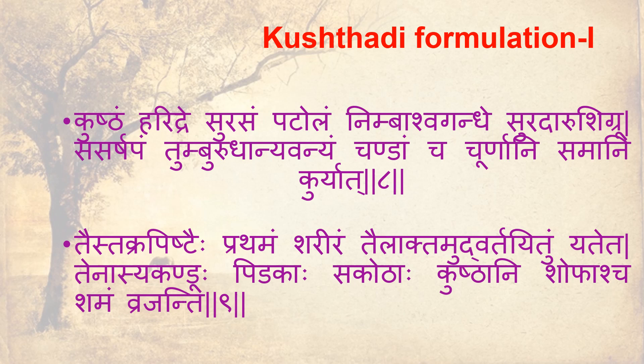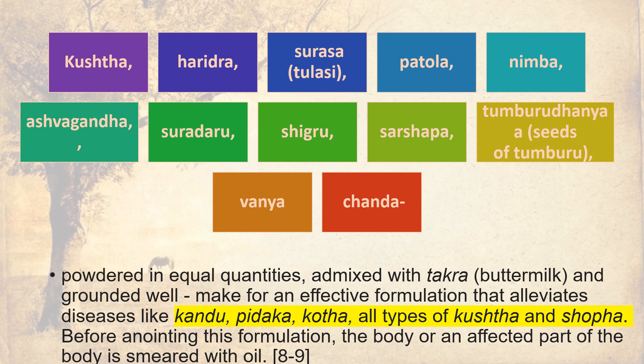Kushtadi Formulation 1: Kushtani Haridra, Surasam, Padolam, Nimbashwaghande, Suradharu, Shikru, Sashabam, Tumaburu, Dhaniya Vanyam, Chandamcha — powdered in equal quantities, mixed with Thakra and ground wet, makes an effective formulation that alleviates diseases like Kandu, Pidaka, Koda, all types of Kushta and Shopa. Before anointing, the affected part of the body should be smeared with oil.